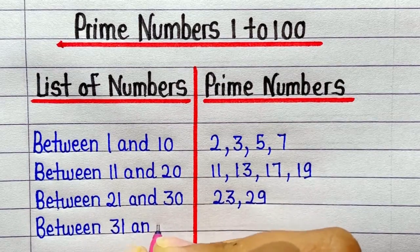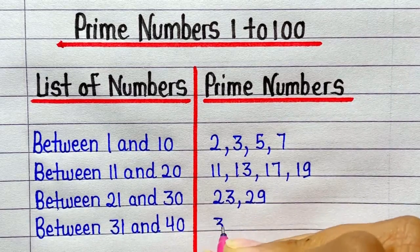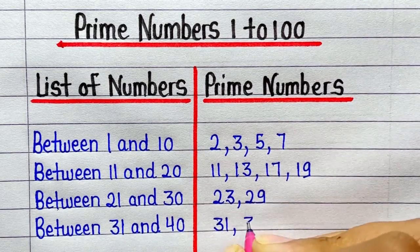Prime numbers between 31 and 40 are 31 and 37.